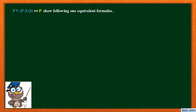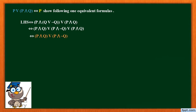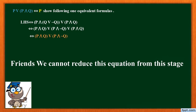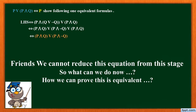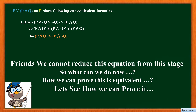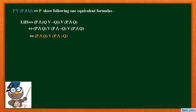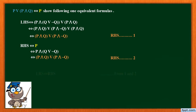Let's see. P or P and Q is equivalent to P — we have to show this equivalence. We will take the larger equation, i.e. the left-hand side, and expand it. But friends, we cannot reduce this equation from that stage. So what can we do now? We will prove this by also working on the right-hand side. We take the right-hand side as P. The P can be expanded as P and the quantity Q or negation of Q. Further, by the distributive law it gives the form P and Q, or P and negation of Q, which is equal to the first equation. In this way, we show that the left-hand side and right-hand side are equivalent by solving both sides simultaneously.